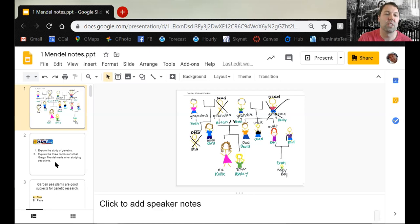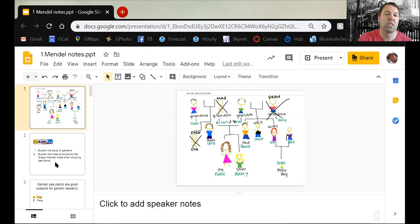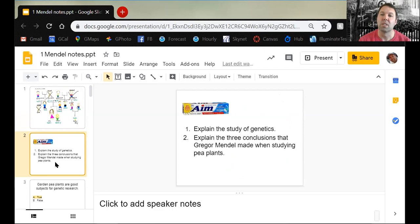Your learning targets for today are: explain the study of genetics, the history with Gregor Mendel, and how we use that today with Punnett squares and pedigrees. Also, know the three conclusions that Gregor Mendel made when studying pea plants. Make sure you can do those by the end of the lecture.